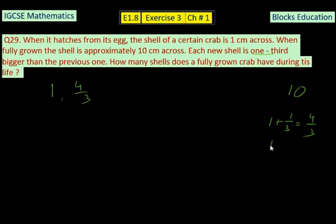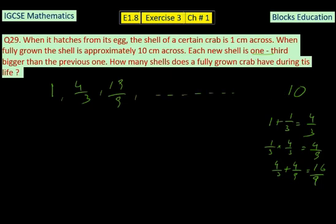Then one third of 4 over 3 is 4 over 9, and it is going to add with the 4 over 3. So 4 over 3 plus 4 over 9 is 16 over 9. So the next size will be 16 over 9. And this continues until it reaches 10. One practice is just keep on doing and doing and see how many terms you will reach. You will get the answer of 9.